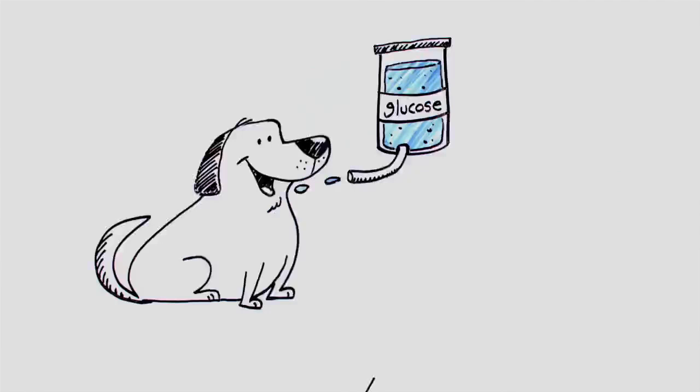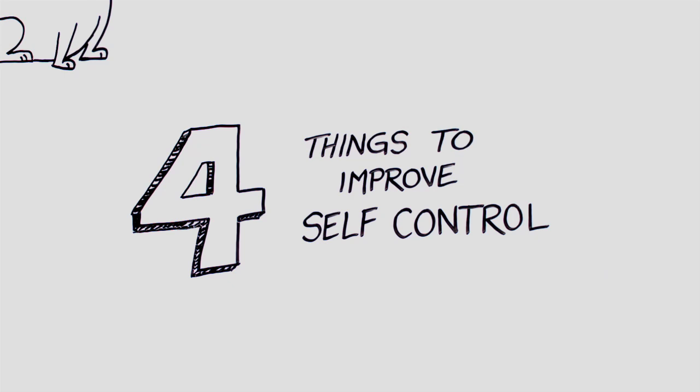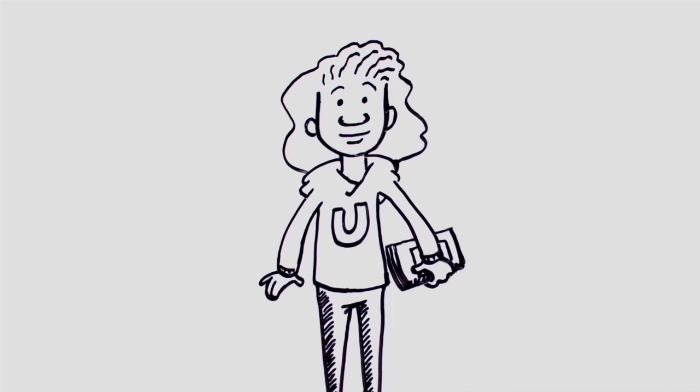Let's wrap up by talking about four things you can do to improve your self-control. As we've seen, improving your self-control has big payoffs, including better health, relationships, and success in school. You can start to see results quickly.